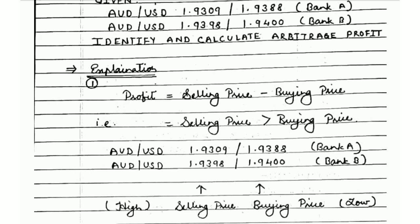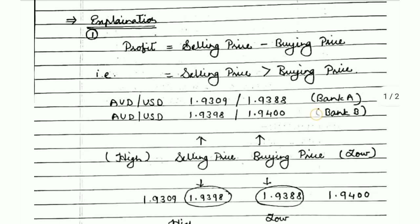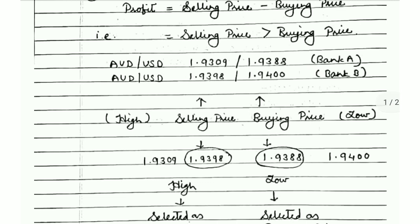If your selling price is high and your buying price is low, then only you can make a profit — otherwise you are making a loss. In arbitrage, we are going to purchase the currency from the bank offering the lowest buying rate and sell that same currency at the bank offering the highest selling rate.